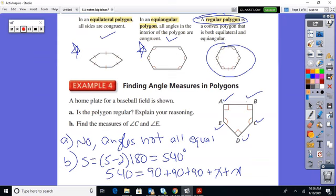So subtract 90, 90, 90 off of 540. And then divide it by 2. And these angles would both be 135. So again, you've got to find the sum first and then state the five angles that are going to make up the 540 and solve it.